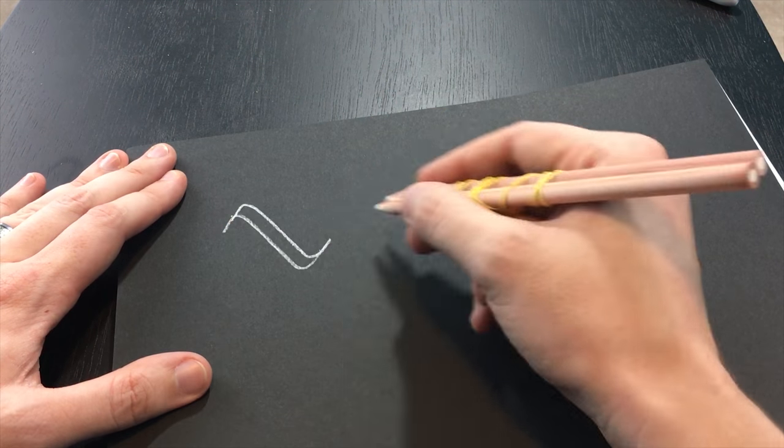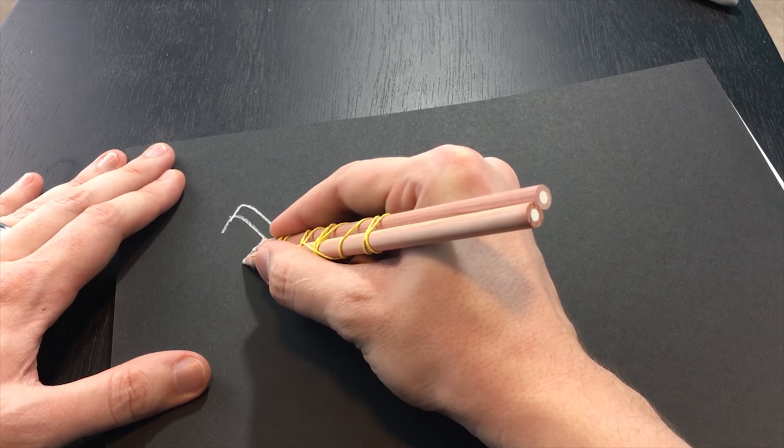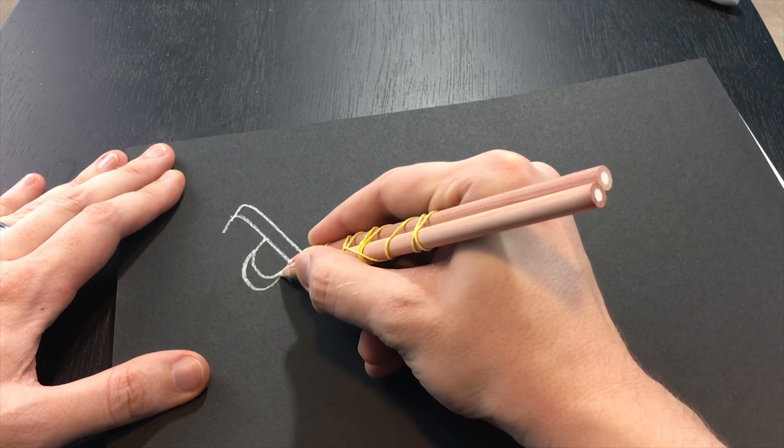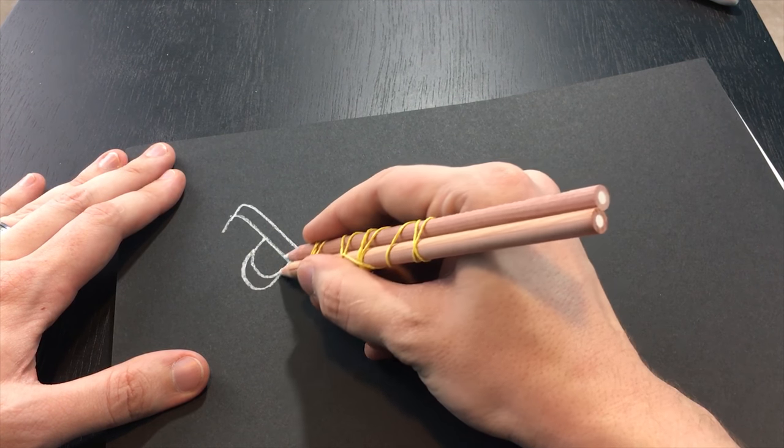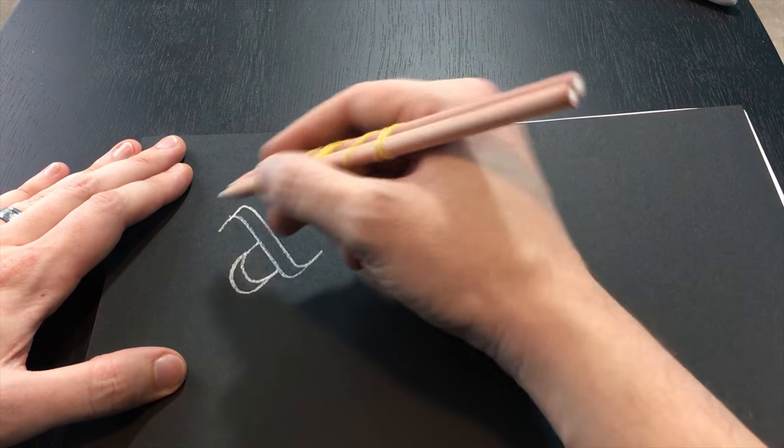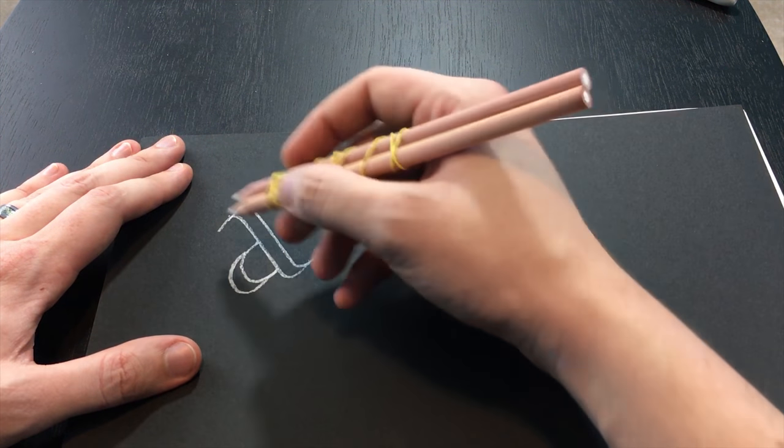Now, this is just the regular bar of the A. And then I'm going to go down and around. And there we go, almost connected. And there's a regular A. And you can see that it kind of had this almost 3D effect.